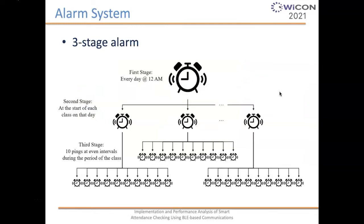For this system, we developed a three-stage alarm. The first stage is set every day at 12 AM. The second stage is an alarm sent to the smartphone at the start of each class. The third stage consists of 10 pings at even intervals during the class period. These alarms are used to detect the presence of the student within the class.